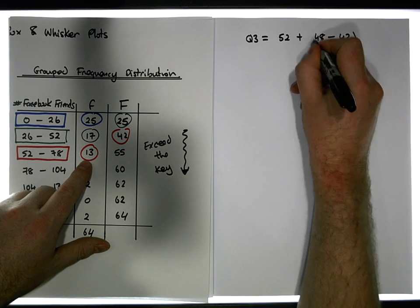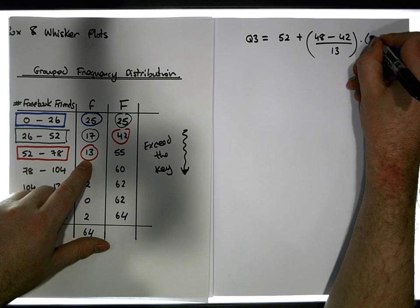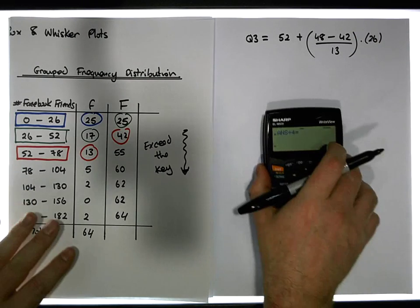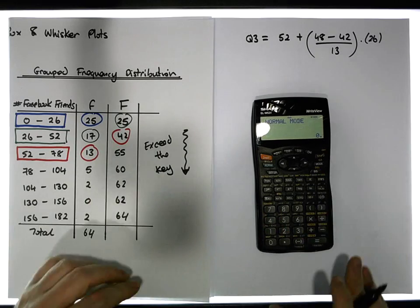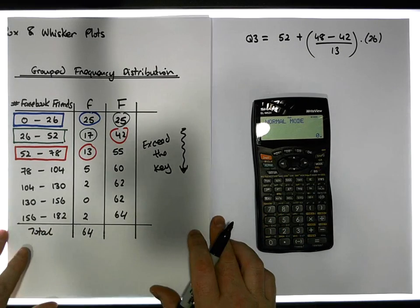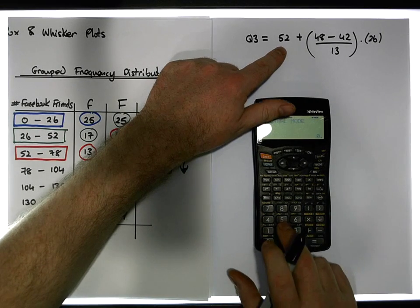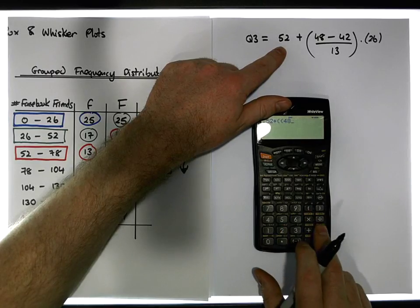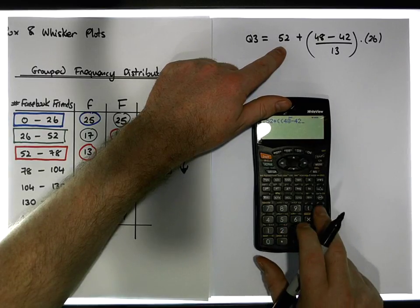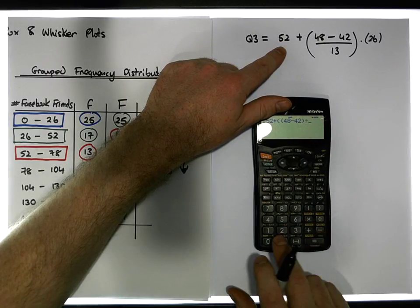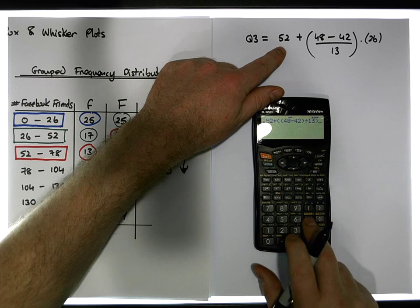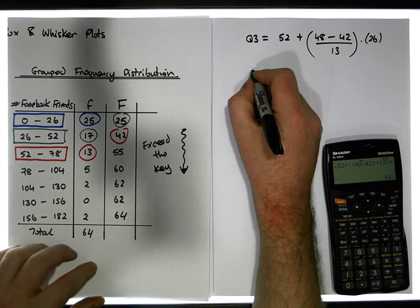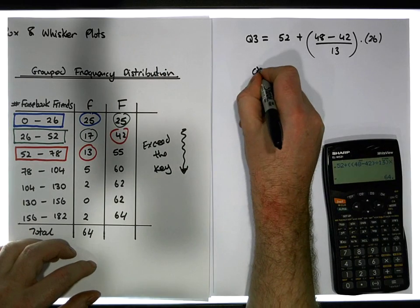I am doing this very fast, but there is a video that actually does these calculations in detail. We just want to get to a box-and-whiskers plot and have our five statistics. So the answer is 52 plus (48 minus 42) divided by 13, multiplied by 26, which gives us 64. So Q3 is equal to 64.